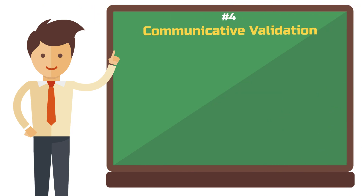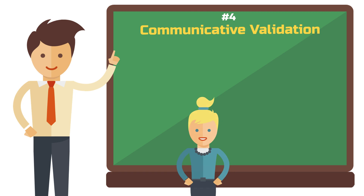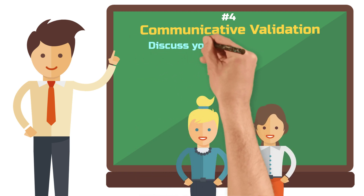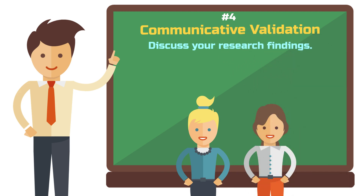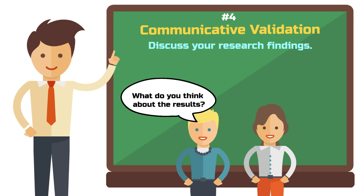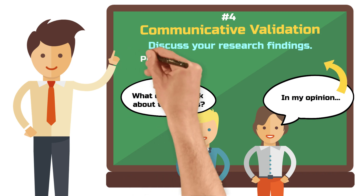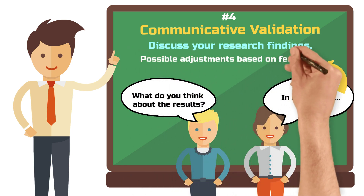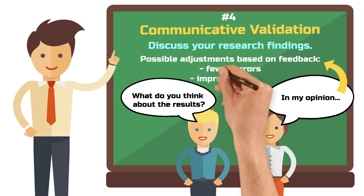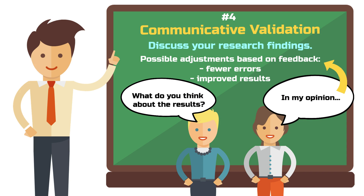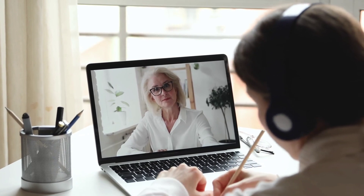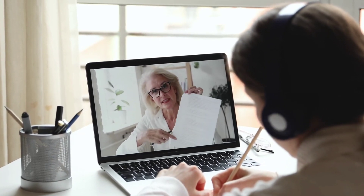Criterion number four: communicative validation. Staying in contact with the people you study allows you to verify your findings. Try to discuss your findings with your participants and other relevant people, and get their feedback. This feedback is used to verify and possibly correct your findings and interpretations. This way, you can identify possible errors or inaccurate interpretations and improve the results. You'll find that many will say, 'Oh, I never thought about it that way before' — that's always a good sign. Throughout the research process, you should be open to feedback from participants and take their comments seriously.